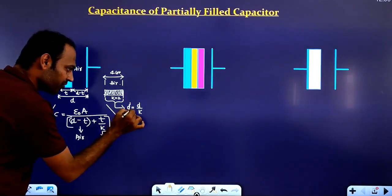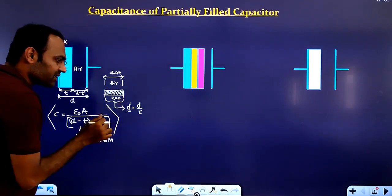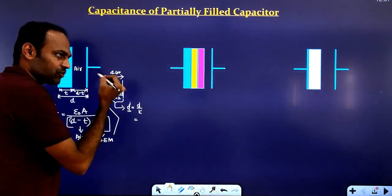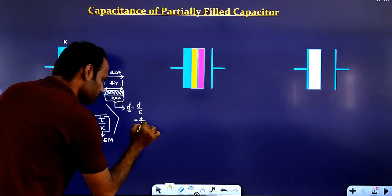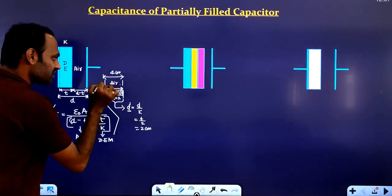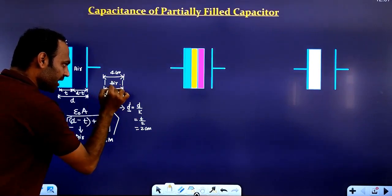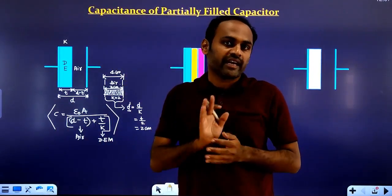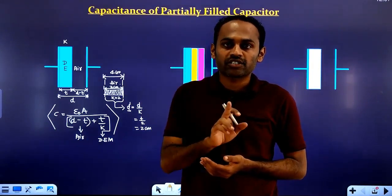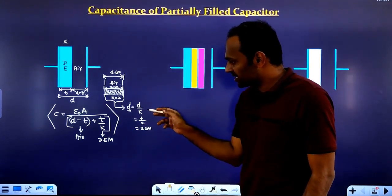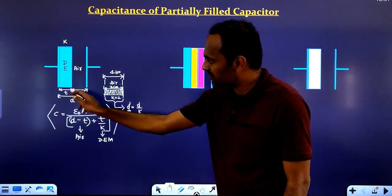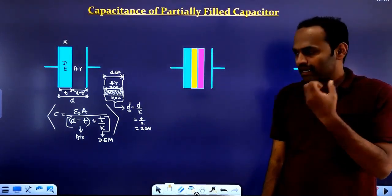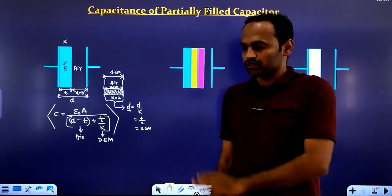The distance in the dielectric medium gets reduced by K times. If the thickness of the dielectric is T and the dielectric constant is K, the effective distance becomes T by K. So we got to know what happens to the distance in air and in the medium — in the medium, we reduce by K times.